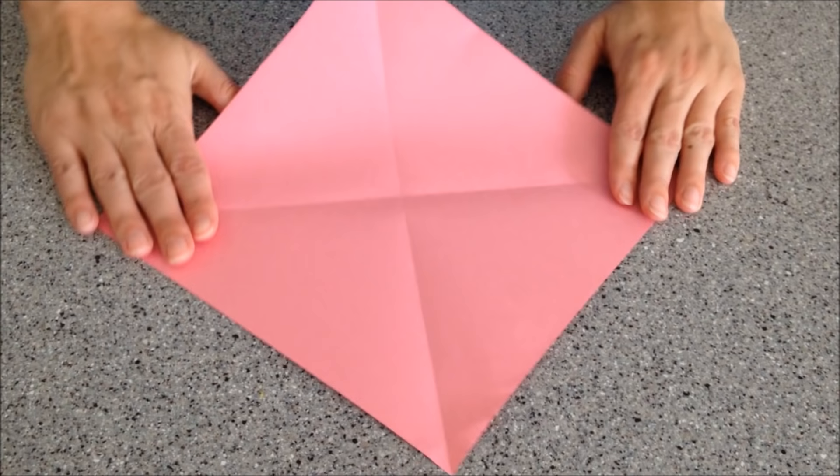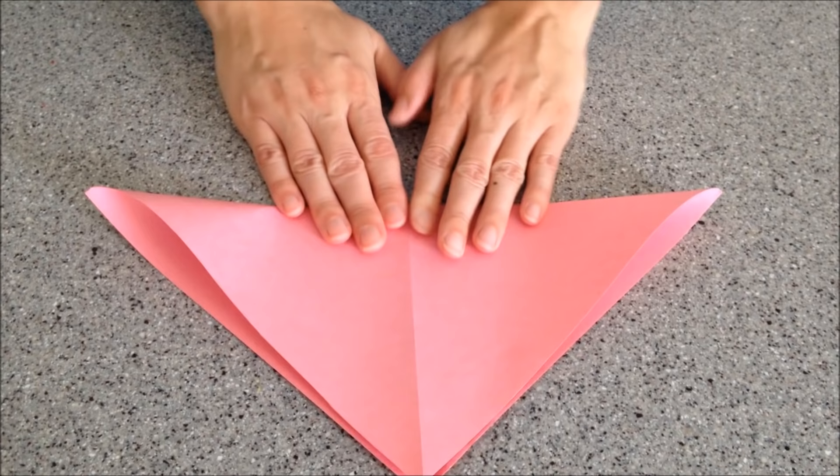Today we're going to show you how to make a cootie catcher. The first thing you do is start with a square piece of paper. You're going to put it in front of you like a diamond and you're going to fold the two corners together to make a triangle.